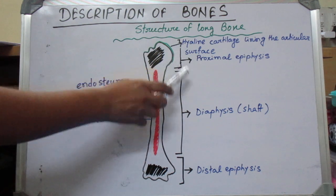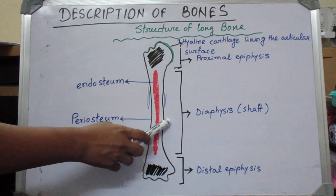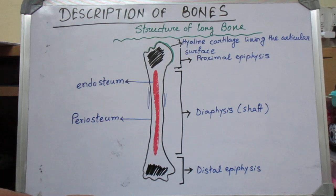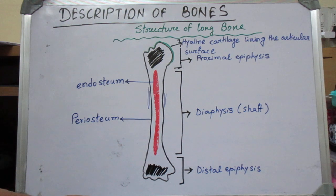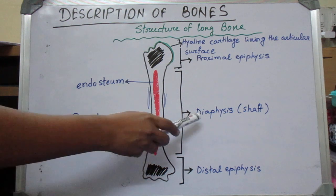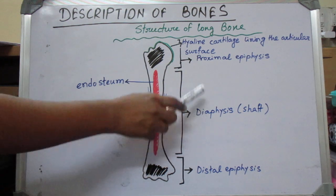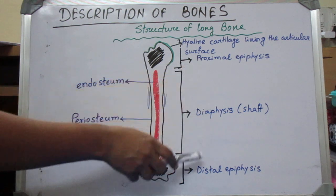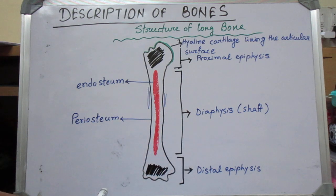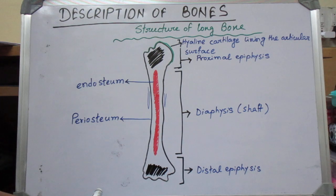The epiphysis is separated from the diaphysis by a layer of hyaline cartilage called the epiphyseal plate or growth plate.